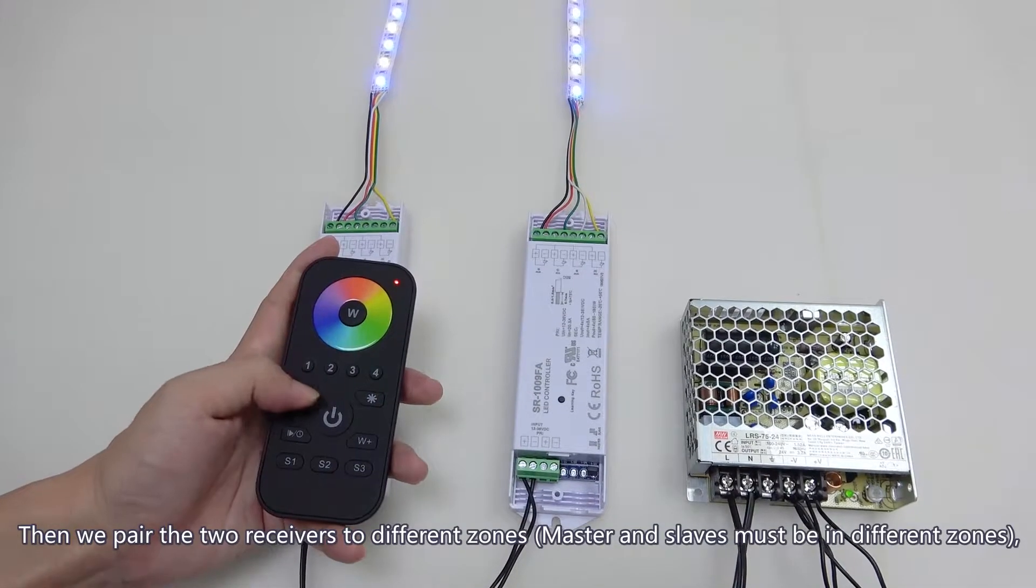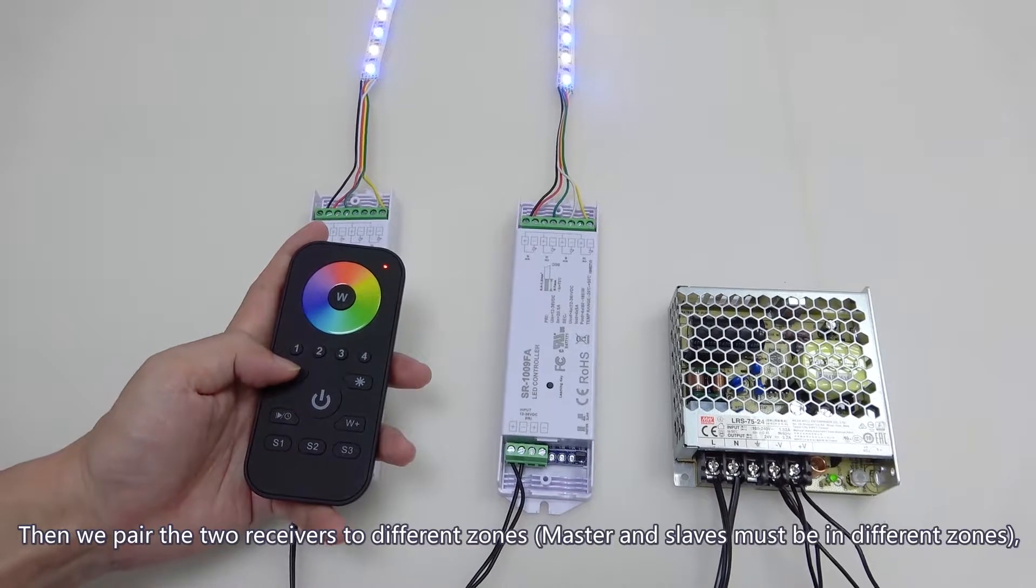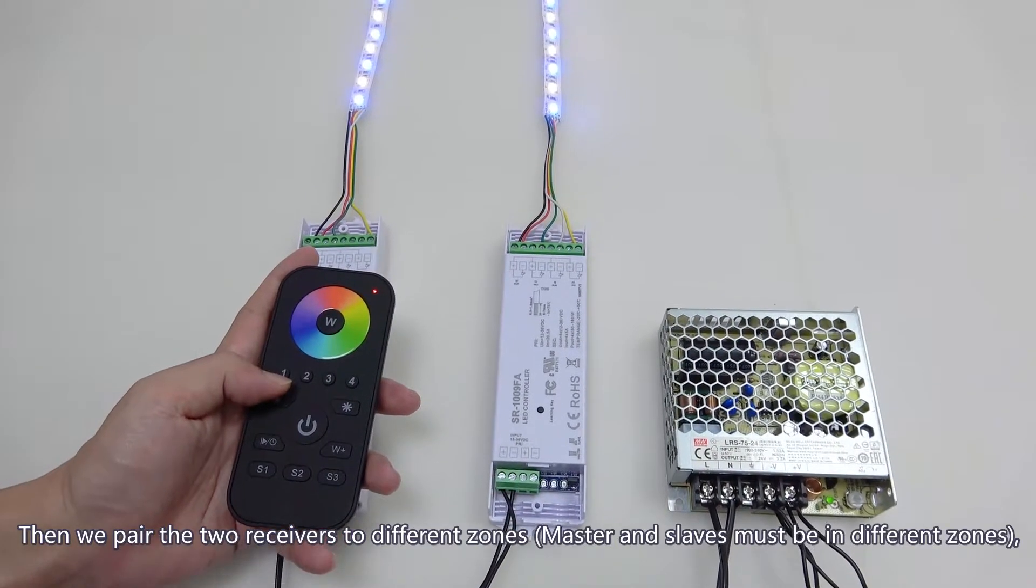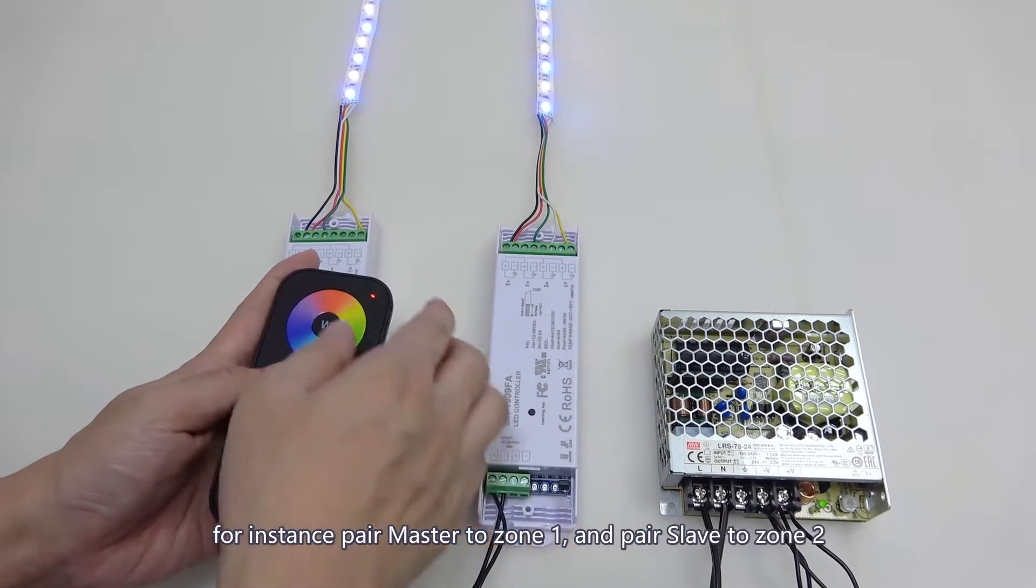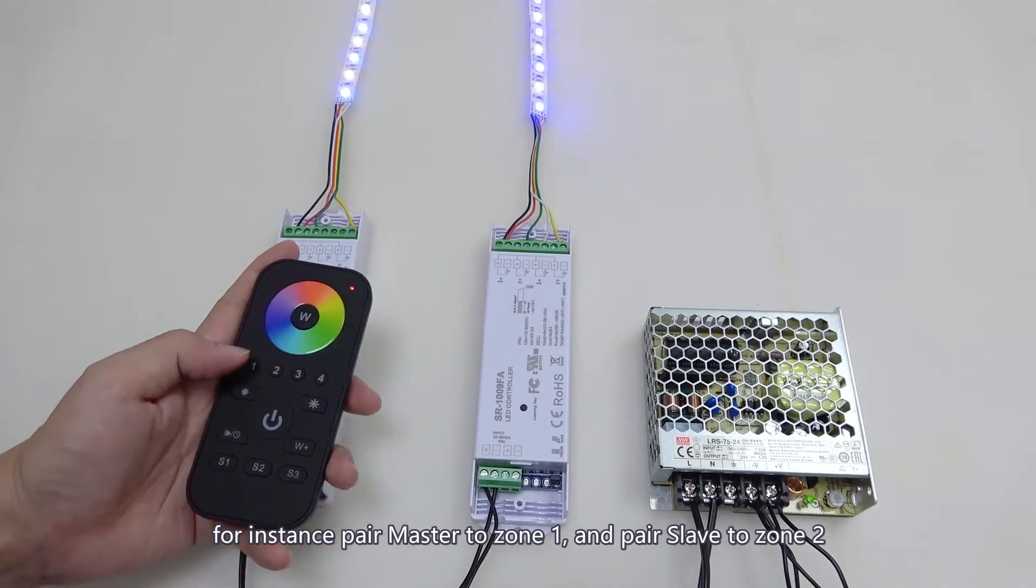Then we pair the two receivers to different zones. Master and slaves must be in different zones. For instance, pair master to zone 1 and pair slave to zone 2.